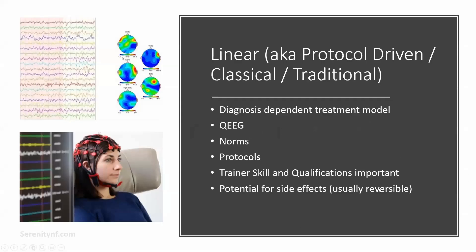Linear — also known as protocol-driven, classical, or traditional neurofeedback — is based on the medical model of diagnosing and treating. It is used to target symptoms based on diagnosis. Practitioners may or may not use a QEEG, or quantitative electroencephalograph, otherwise known as a brain map. Typically a normative database based on average people in your age group is used to determine where your brain deviates from the norm, and then protocols are chosen to help nudge your brain to behave more like an average brain. Trainer qualifications, education, experience, and skill are very important factors that can influence results, and this type can be very effective in the right hands.